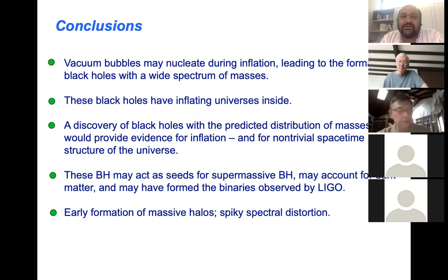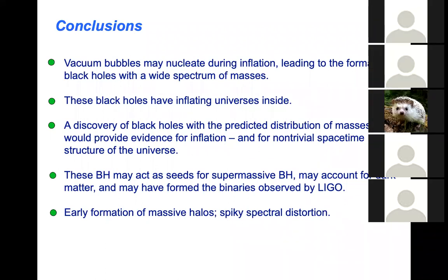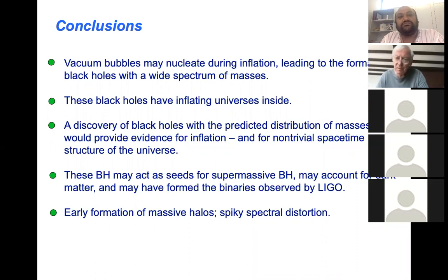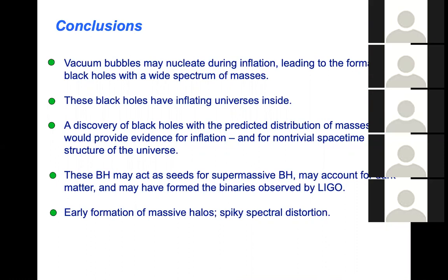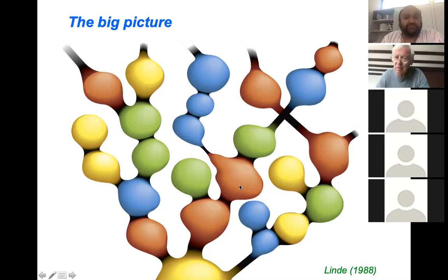A question is asked whether our universe could be inside a black hole surrounded by a universe with a lower vacuum energy density. According to this picture, if someone lives in the other universe, then for them we live inside a black hole. This scenario makes it pretty much inevitable that we live inside a black hole of some other universe.